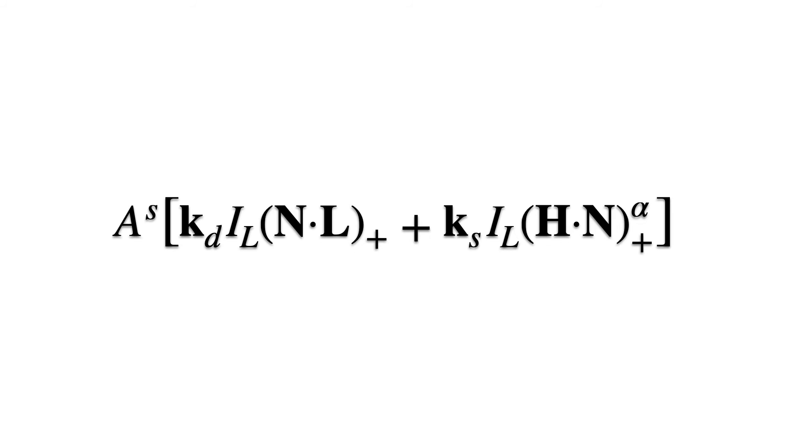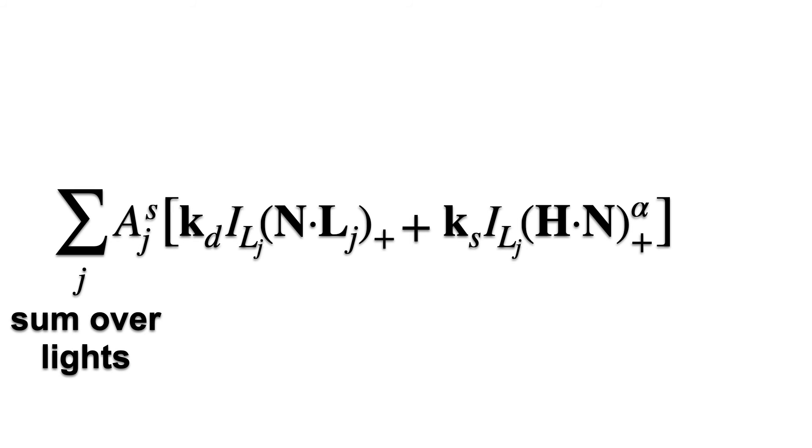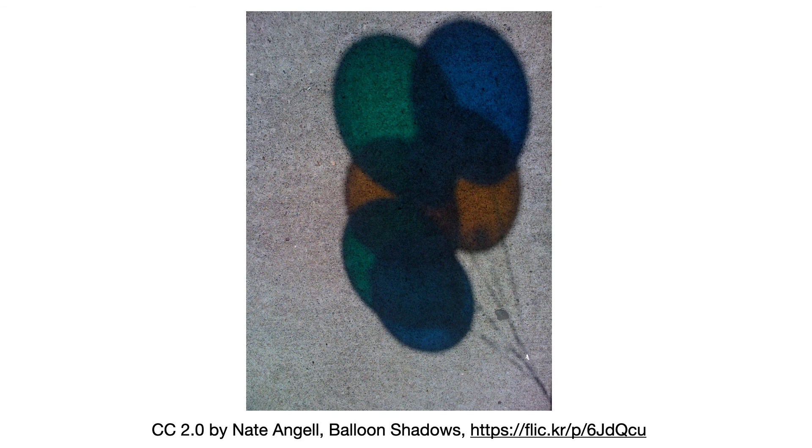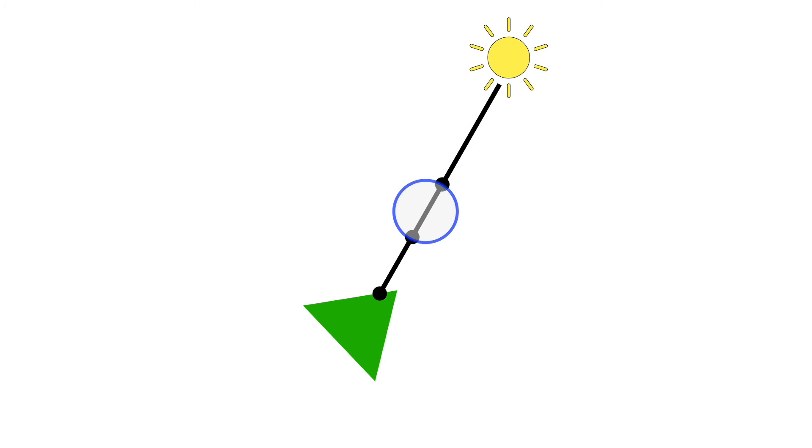To model colored shadows and soft shadows, we just need to sum these equations over multiple light sources. Another type of colored shadow comes from transparent objects, like these balloons. A simple way to model these is attenuate the light each time the ray enters or leaves the object.